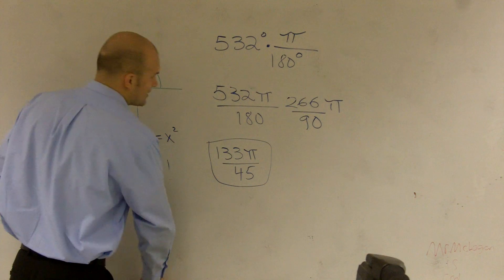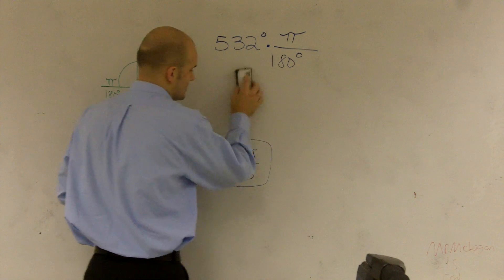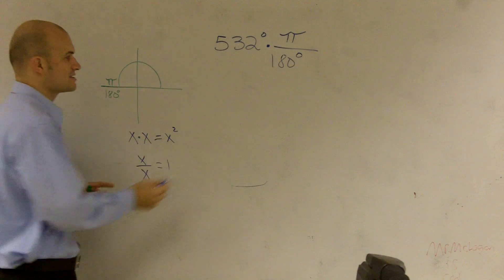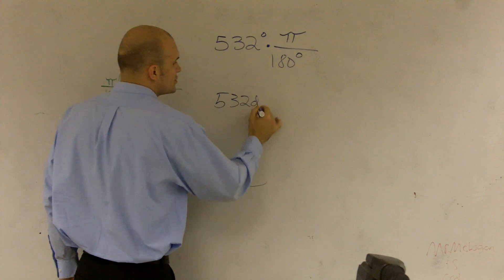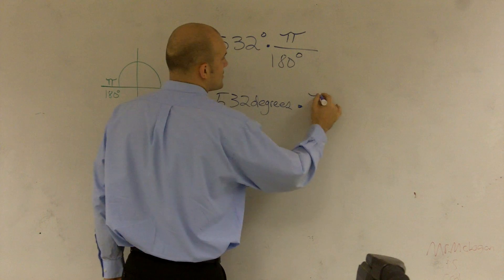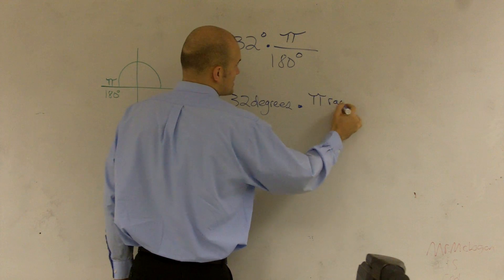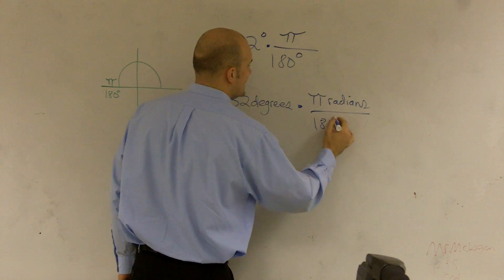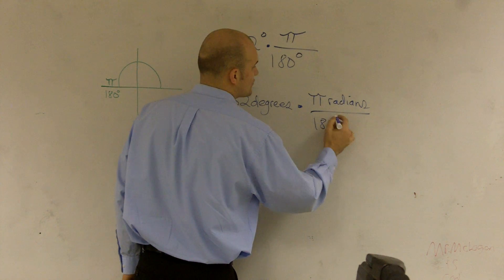Now, if I was just going to go back and I was going to rewrite this, okay? And this, what I'm just trying to explain with this is, this is 532 degrees, right, times pi, pi, is in radians, over 180 degrees.